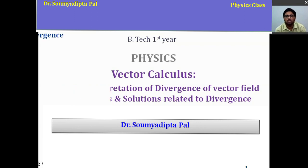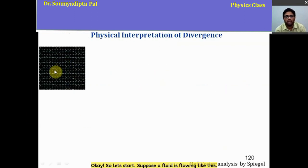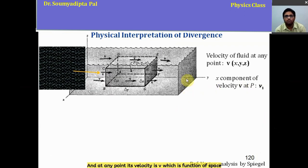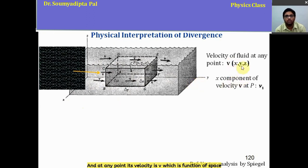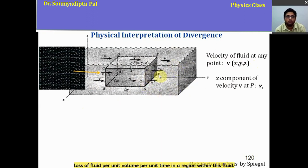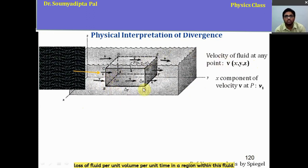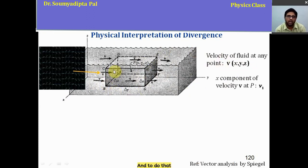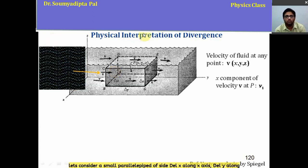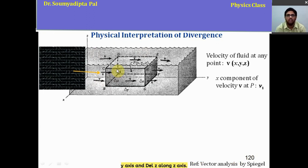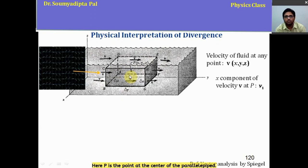Let's start. Suppose a fluid is flowing, and at any point its velocity is V, which is a function of space coordinates. We want to find the loss of fluid per unit volume per unit time in a region within this fluid. To do that, let's consider a small parallelepiped of sides Δx along x-axis, Δy along y-axis, and Δz along z-axis, where P is the point at the center of the parallelepiped.